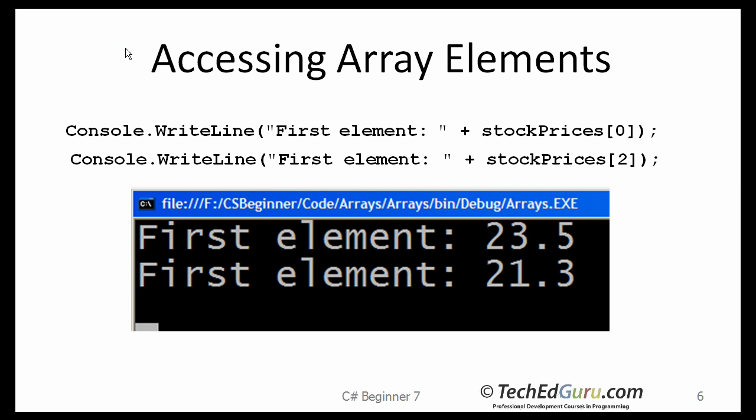Accessing array elements. Here, we are accessing the first and the third elements of the array. Keep in mind that the first element always has an index of 0, and the last element has an index of size minus 1, in this case 3.